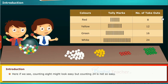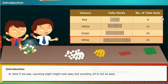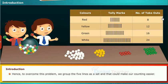Here, if we see, counting 8 might look easy but counting 24 is not so easy. Hence, to overcome this problem, we grouped the 5 lines as a set, and that could make our counting easier.